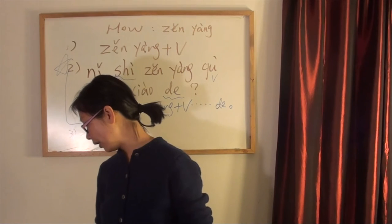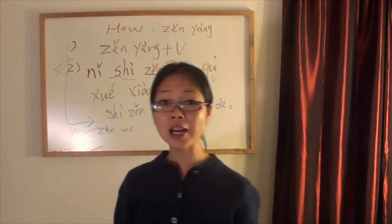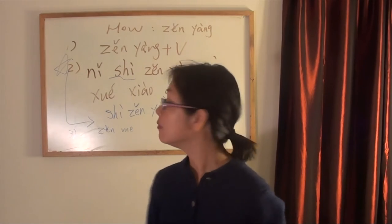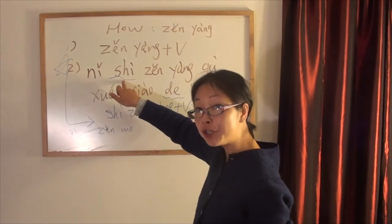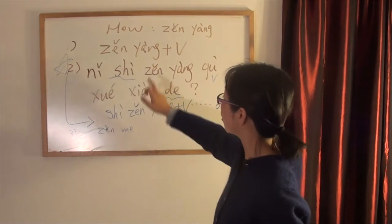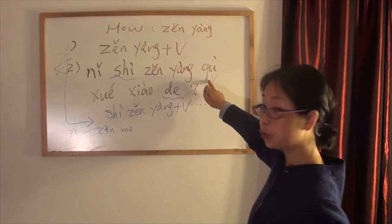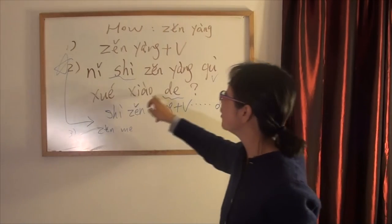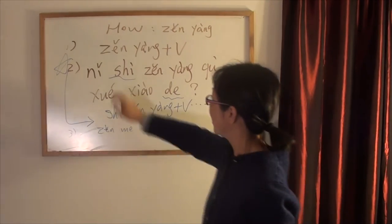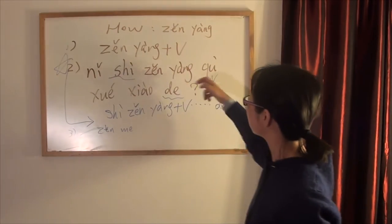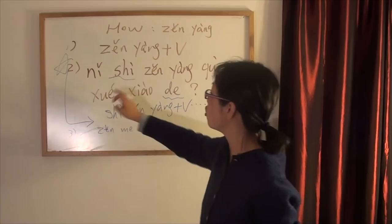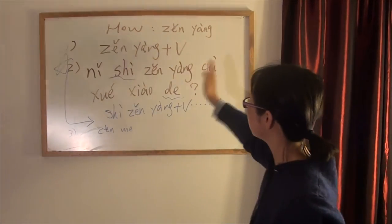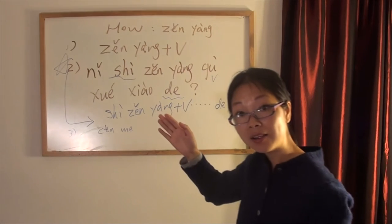Now let me give you more examples. 'How did you learn Chinese?' In Chinese: 你是怎样学中文的, or 你是怎么学中文的. 学 means 'learn.' You got it?